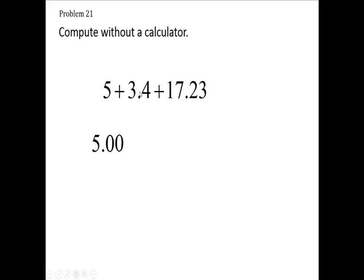Now copy down your $3.4. So $5 and $3. Point, line the decimals up. Put your 4. So what are you going to put here? Another one of these placeholders? Another placeholder. So that's what $3.40 looks like, doesn't it?